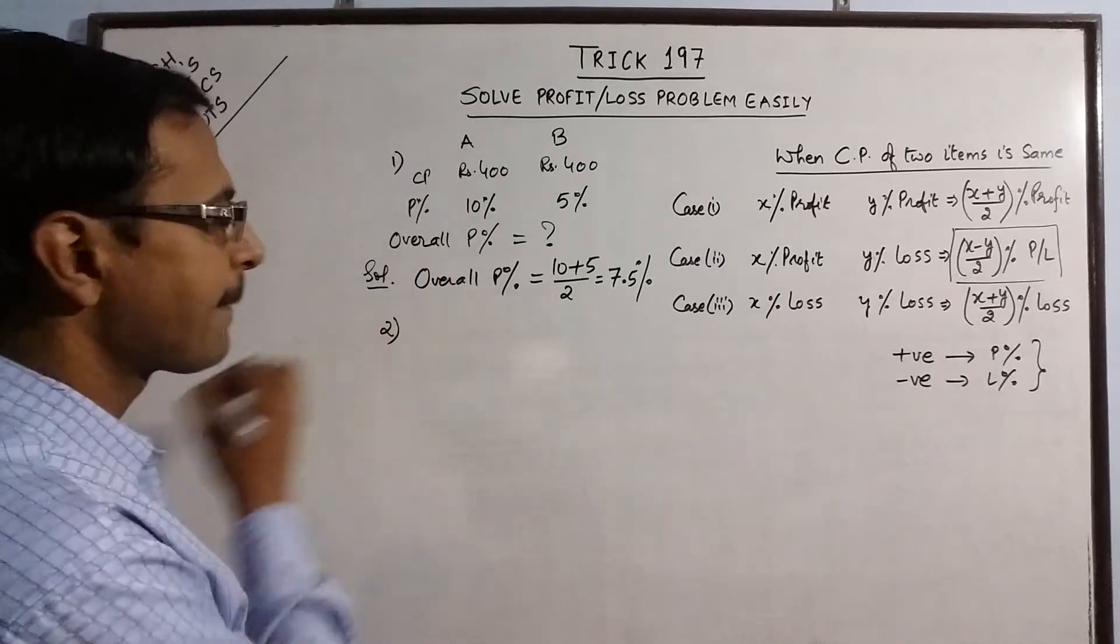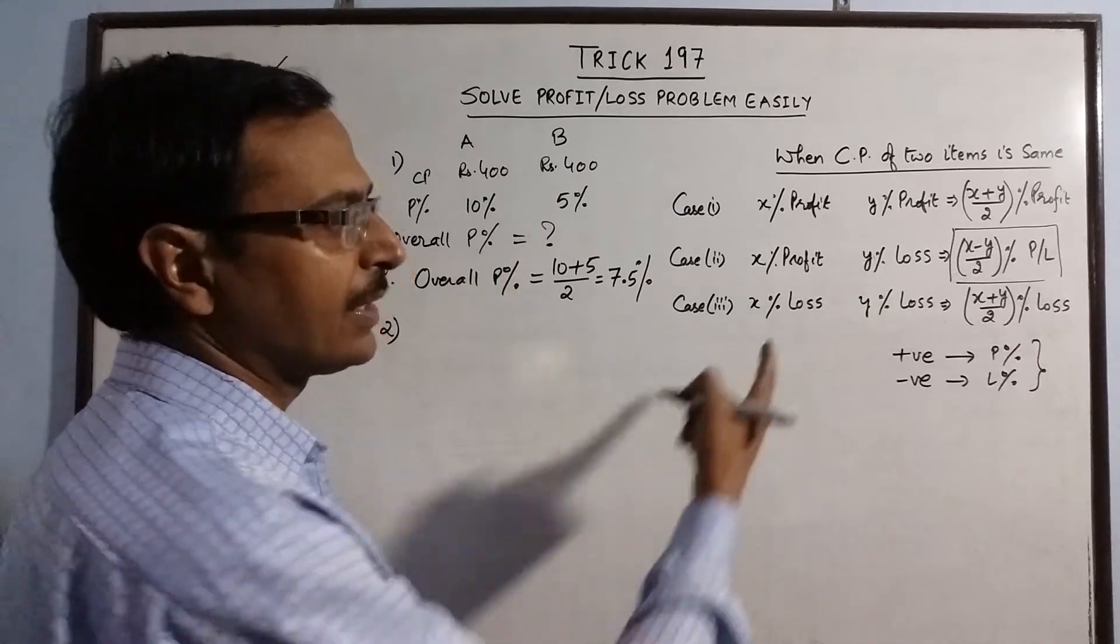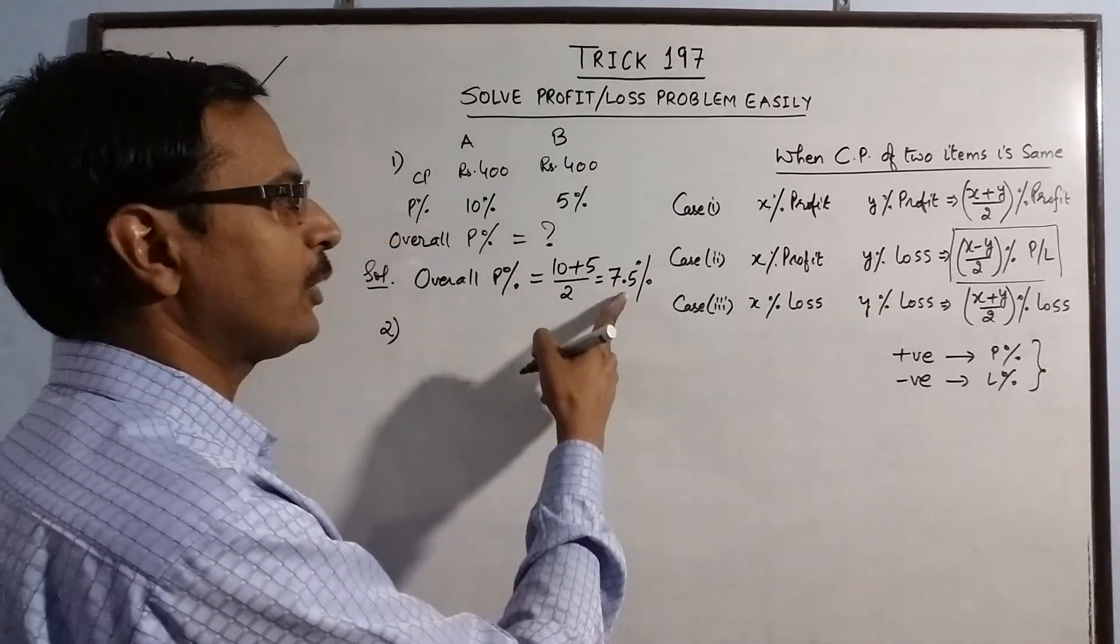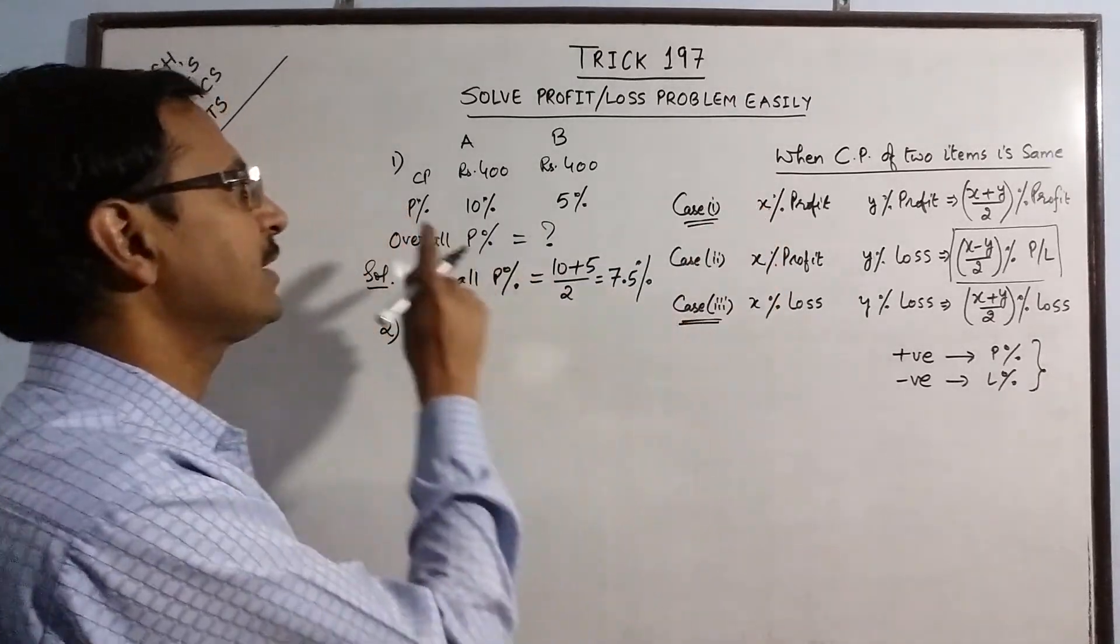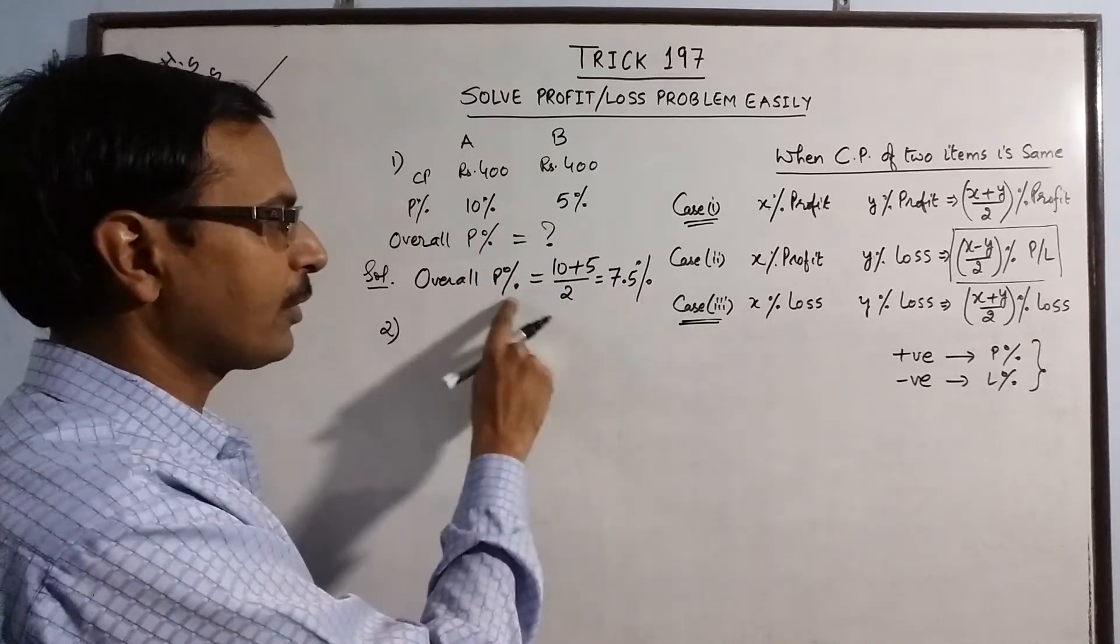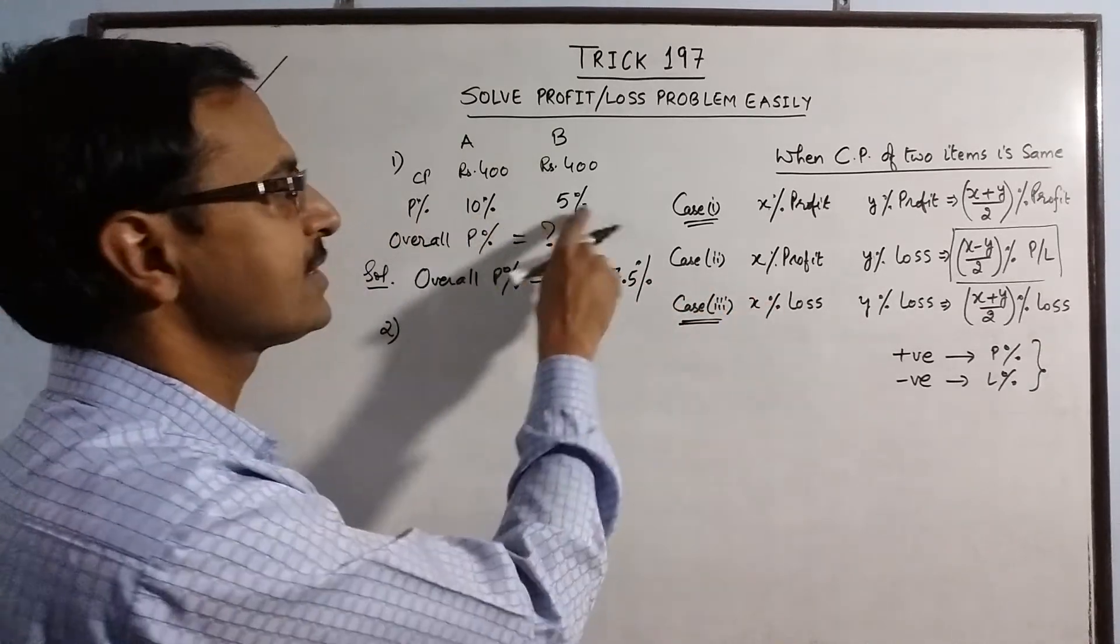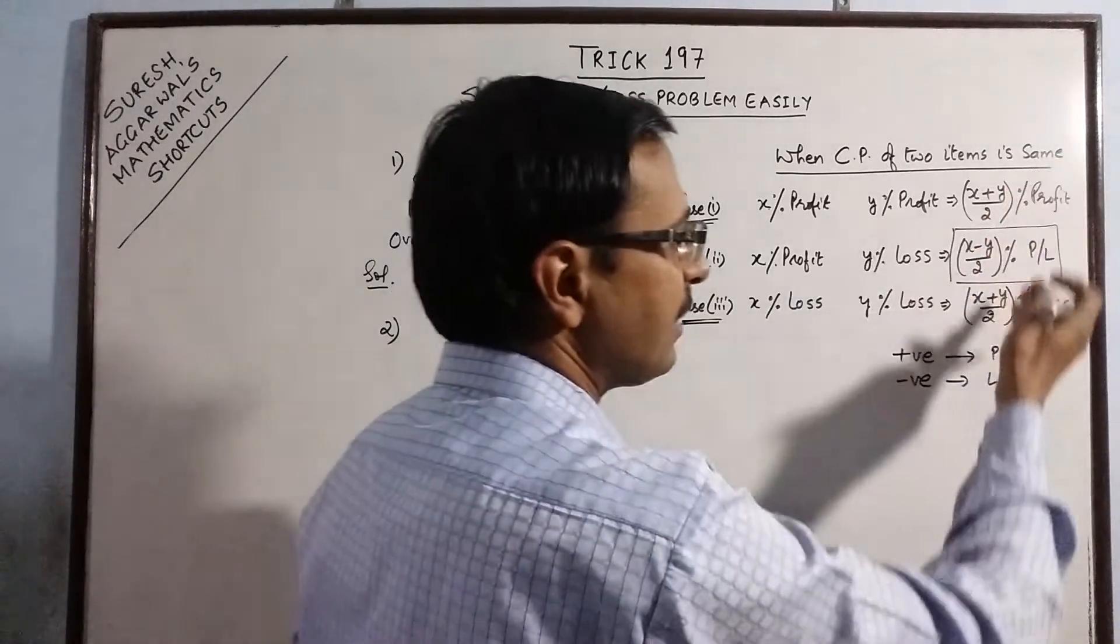In the second case, suppose the same case applies to loss, then again it will be 7.5% loss. So I am not doing the third case, because first and third case are the same, except that here it is profit percent, so we have net overall profit percent. In case of losses, we will have net loss percent. So our formula remains the same in both the cases.